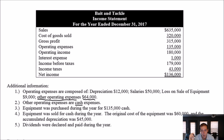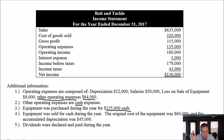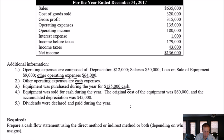Equipment was purchased during the year for $135,000 — cash. Equipment was also sold for cash during the year; the original cost was $60,000 and accumulated depreciation was $45,000. Dividends were declared and paid during the year — presumably for cash. So we've got to prepare a cash flow statement using the direct method, or both, depending on what our instructor assigns. We're doing both.